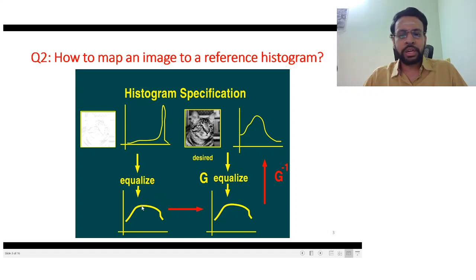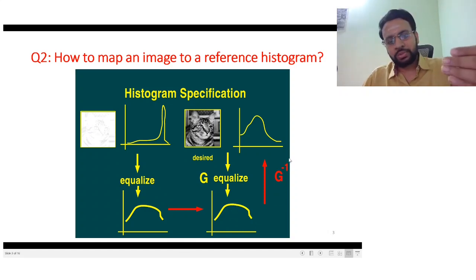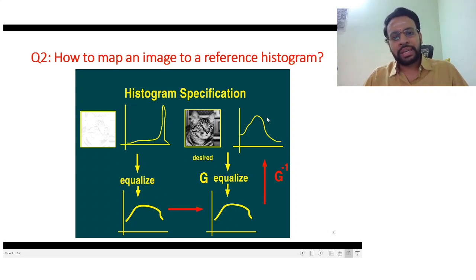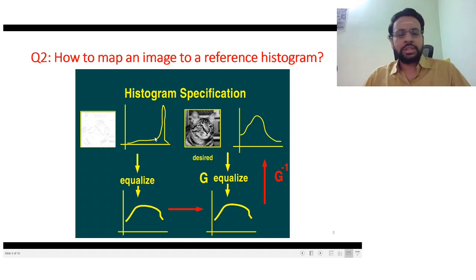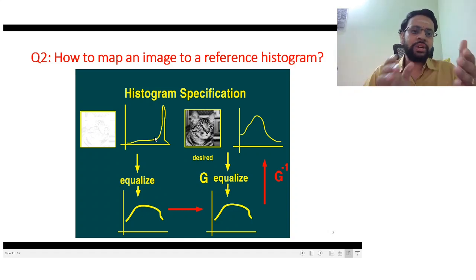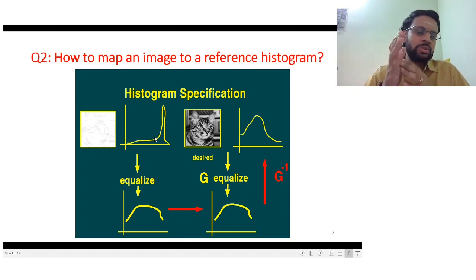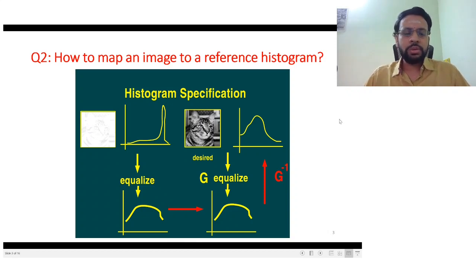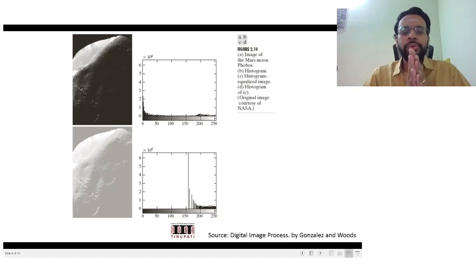You take the same value there and compute the inverse transformation, and from that you will know where this maps to — that is the intensity with which you replace the original intensity in the given image. This non-uniqueness of finding the inverse was discussed in more detail in the zoom session, so I leave that part there. You may go through it for more details.